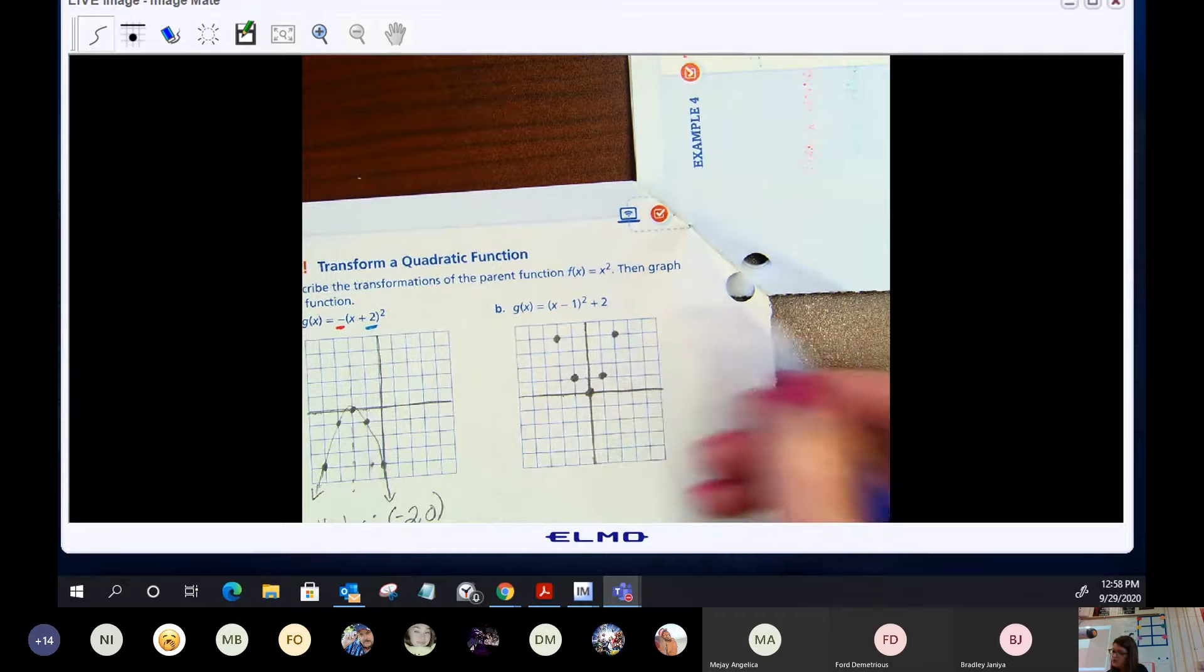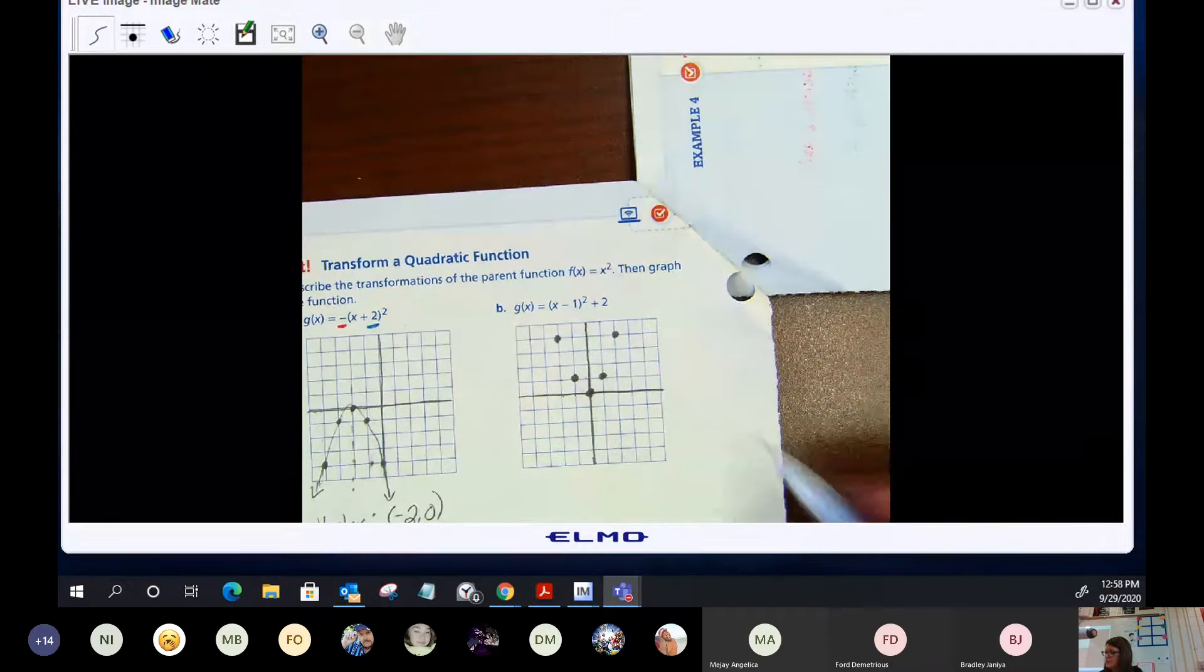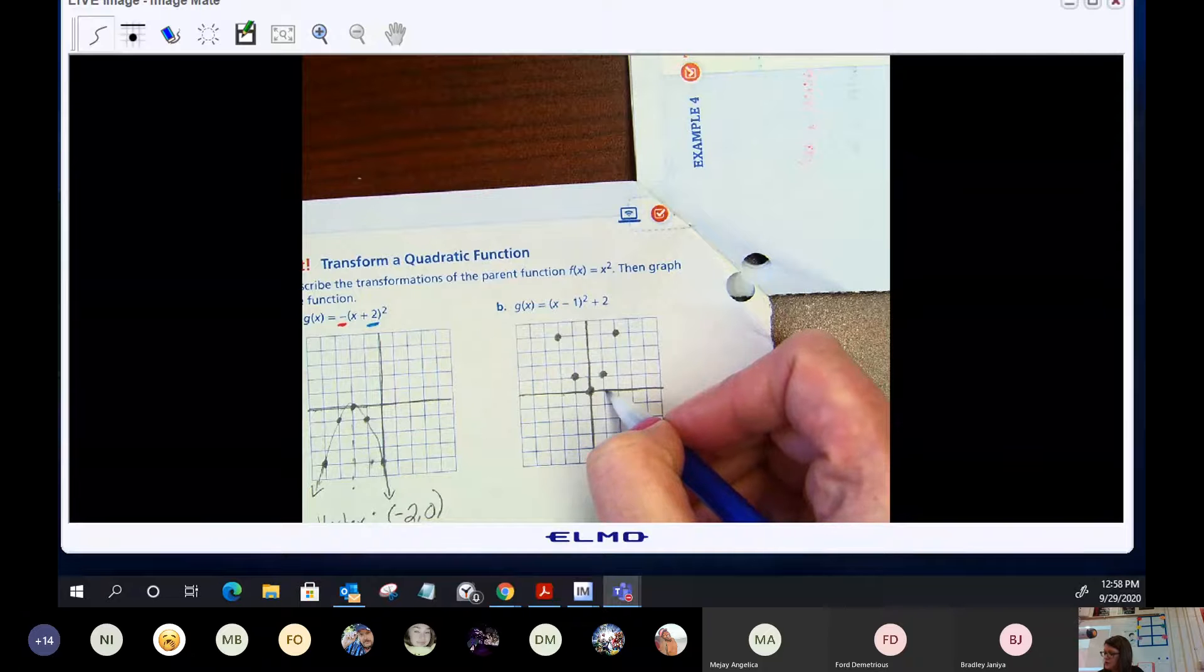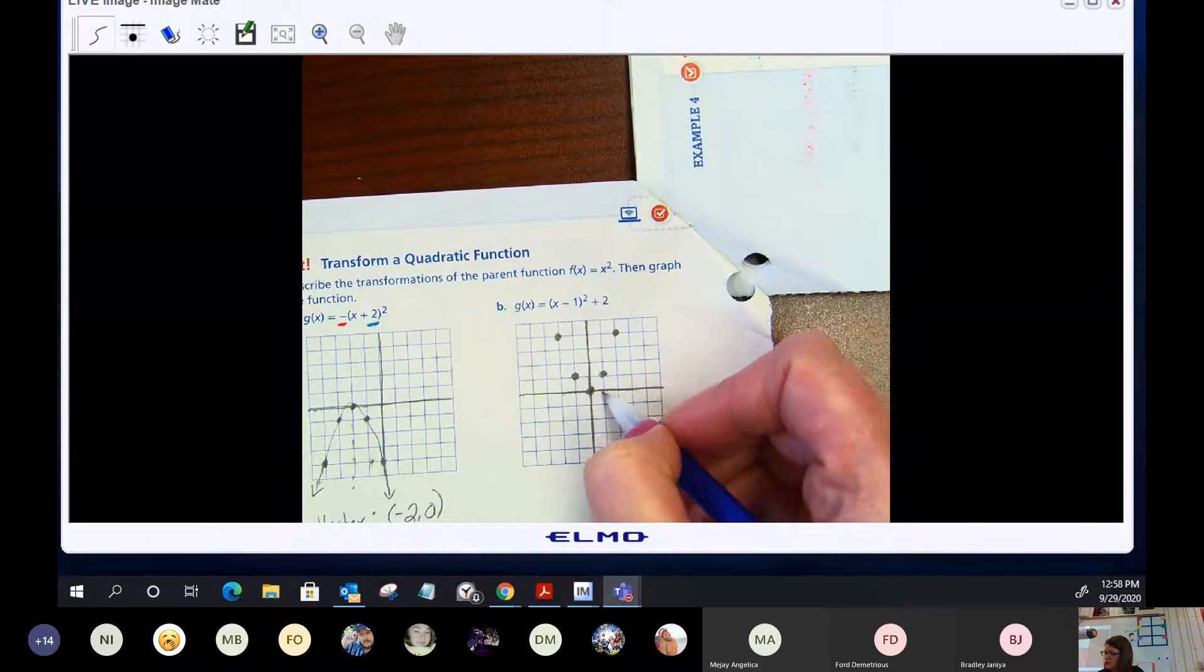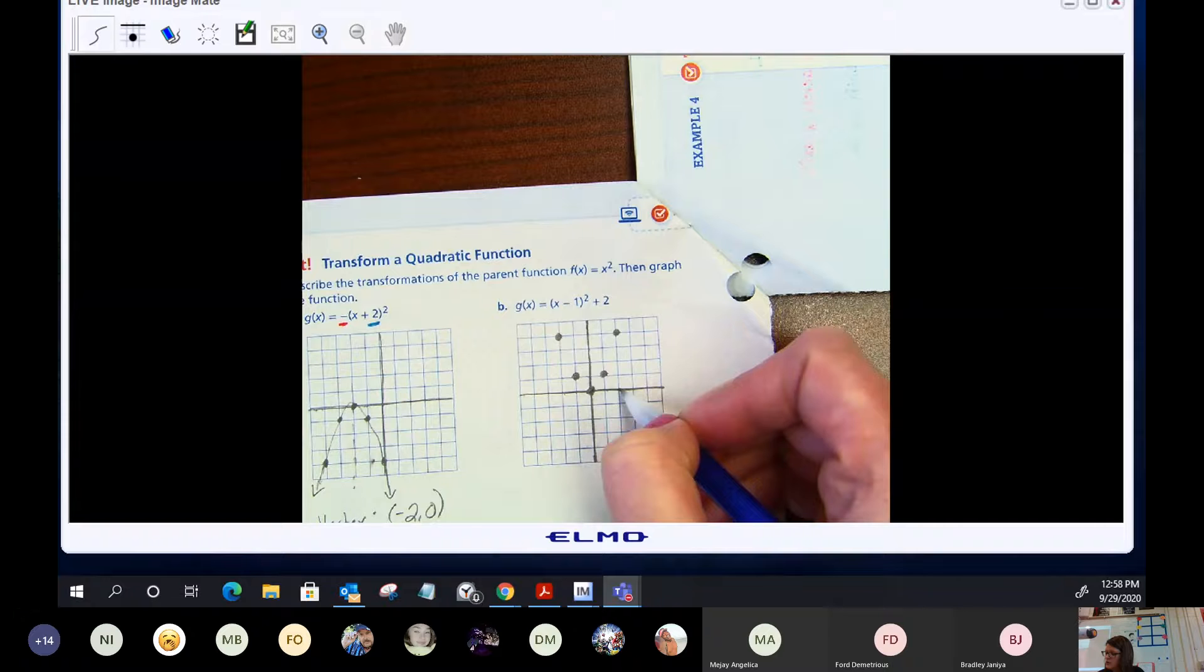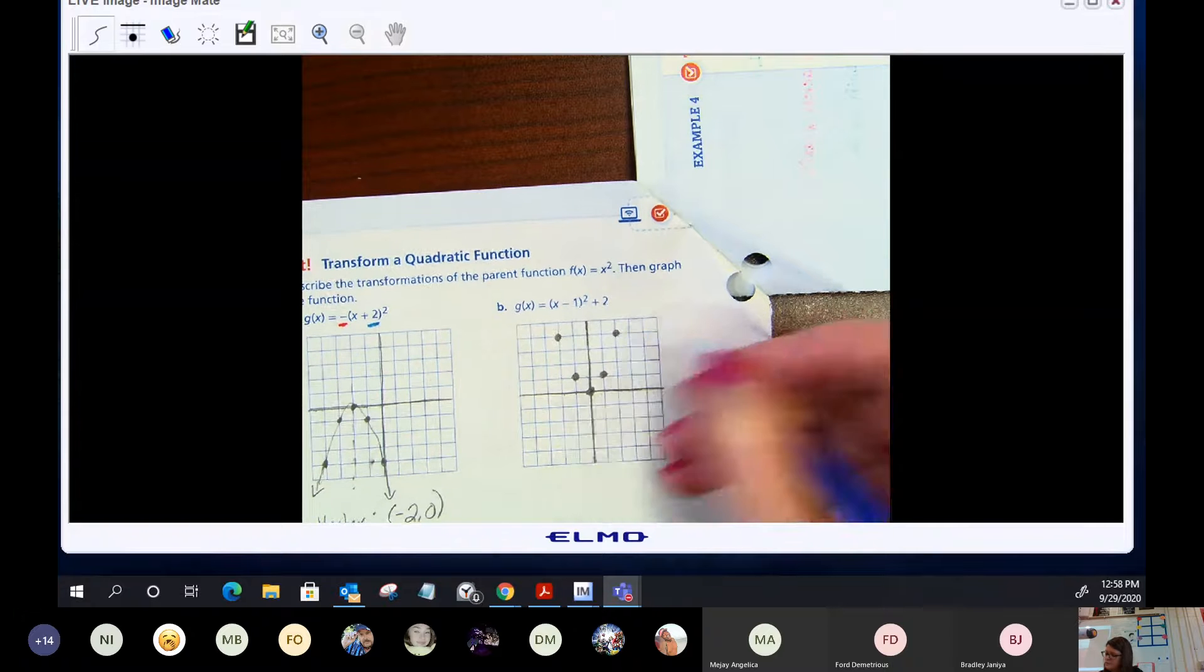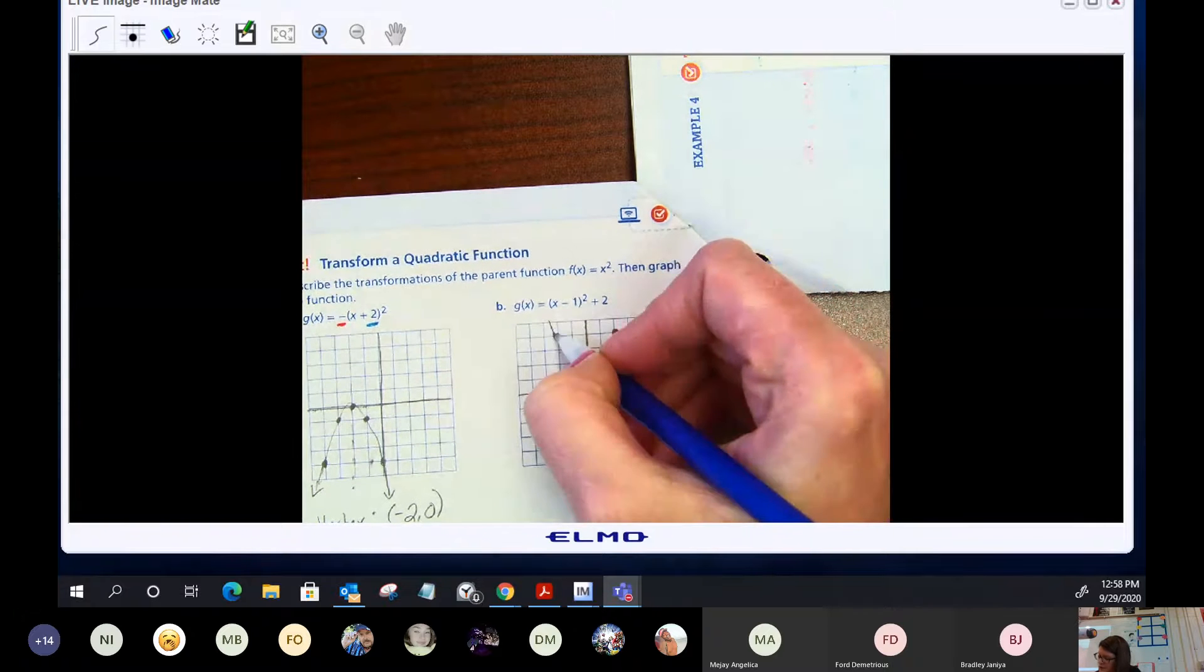And you can confirm that algebraically by going, okay, well here's x is one, one squared is one. If x is two, x squared is four. So let's just draw in...